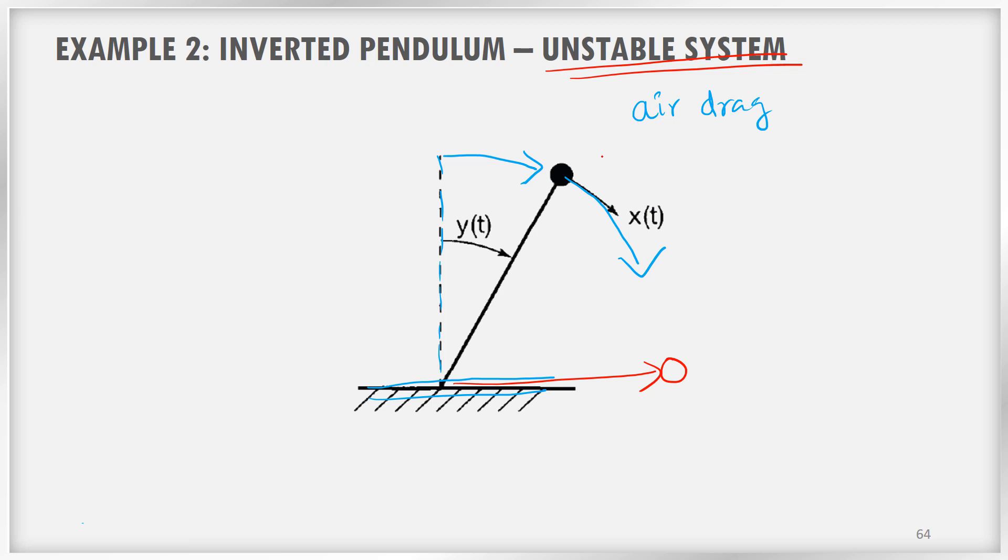Why? Because I have applied only a very small, very small finite input. For the small input itself, it created a very large movement of angular deviation and now it is not able to go back to the original position. So for a very small input, it produced an unbounded output. So because of that reason, this is an unstable system.